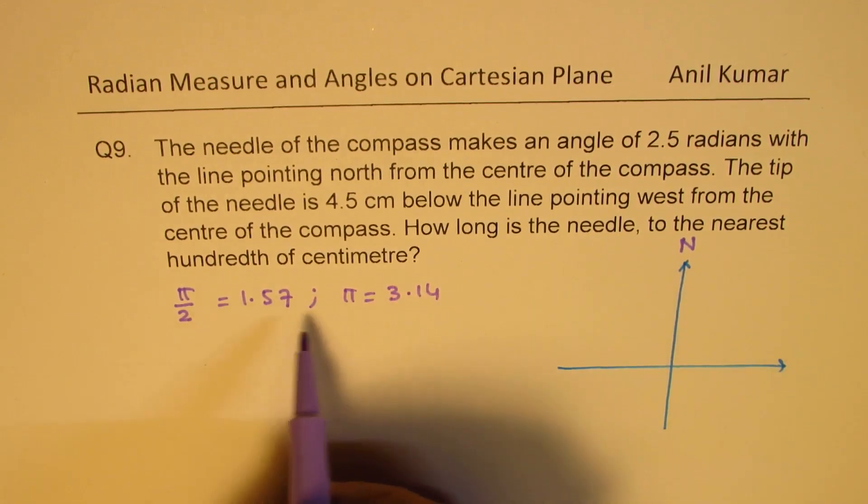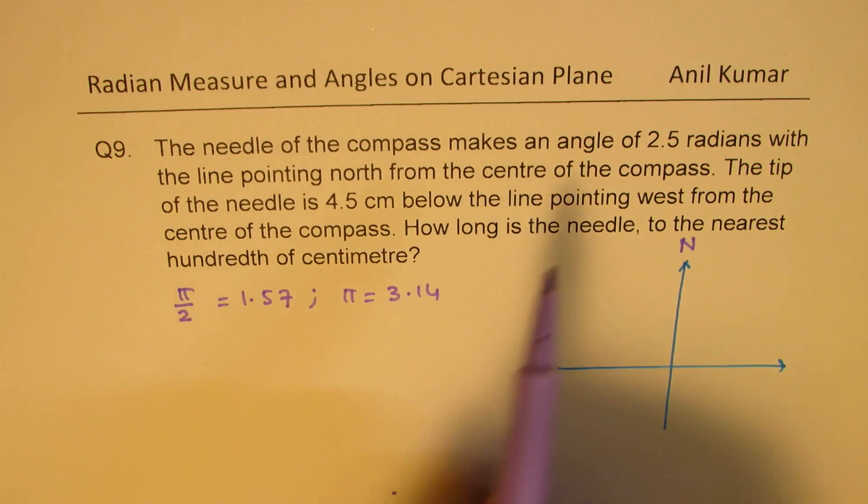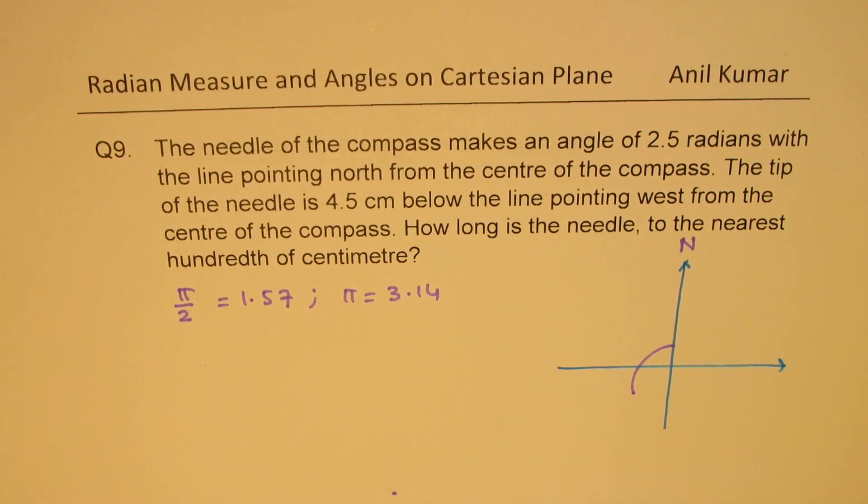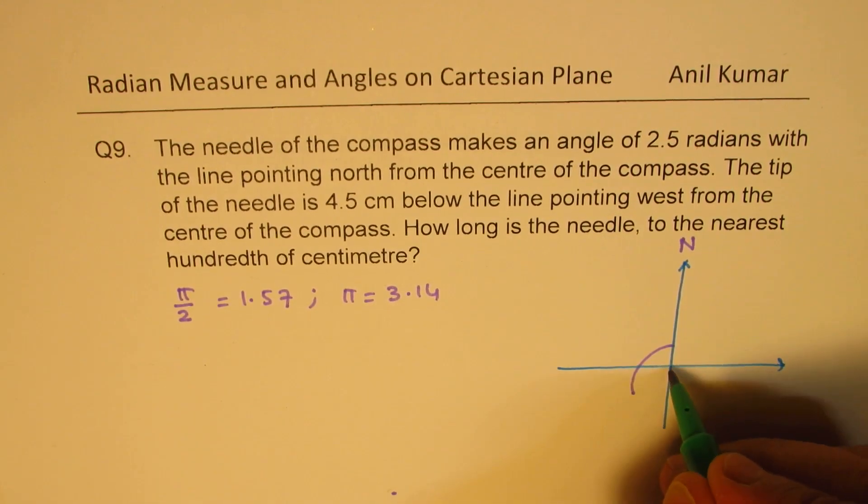So, 1.57, this is 2.5, so this definitely is somewhere here in that quadrant. So, the position could be shown like this for the compass.